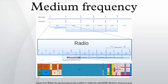The MF band is also known as the hectometer band or hectometer wave as the wavelengths range from 10 to 1 hectometer.